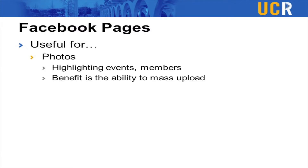One of the things Facebook pages are good for is photos. You can use photos to highlight your events or highlight certain members that do something really well. One benefit is that you're able to mass upload — if you have a big event, you can post all 60 of your pictures at once. You can also tag individual members, which means their friends will see those pictures, giving you even more exposure.